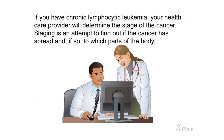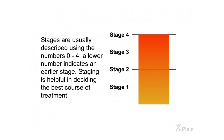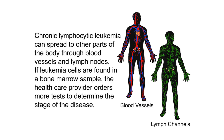If you have chronic lymphocytic leukemia, your health care provider will determine the stage of the cancer. Staging is an attempt to find out if the cancer has spread and, if so, to which parts of the body. Stages are usually described using numbers 0 through 4; a lower number indicates an earlier stage. Staging is helpful in deciding the best course of treatment. CLL can spread through blood vessels and lymph nodes, and if leukemia cells are found in a bone marrow sample, more tests are ordered to determine the stage.